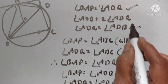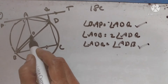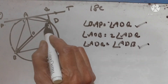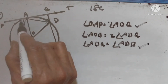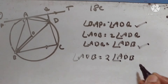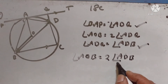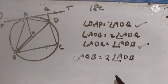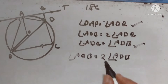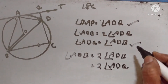Now, let us prove that angle AOB equals 2 times angle ADQ. Angle AOB is the angle subtended by arc AB at the center, and angle ADB is the angle subtended at another point on the circumference by the same arc. Therefore, angle AOB equals twice angle ADB. The angle subtended at the center equals twice the angle subtended at the circumference by the same arc. Since we proved angle ADQ equals angle ADB, angle AOB equals 2 times angle ADQ. This is also proved.